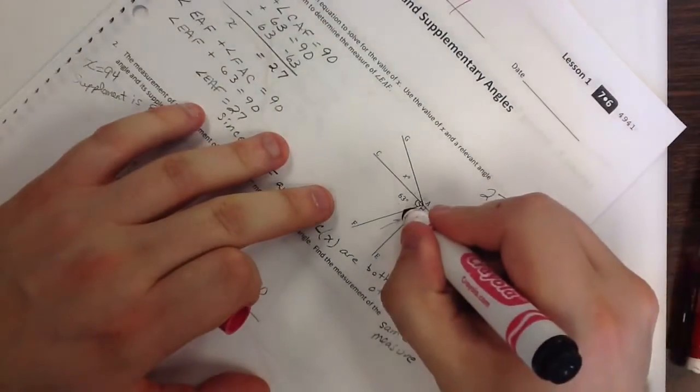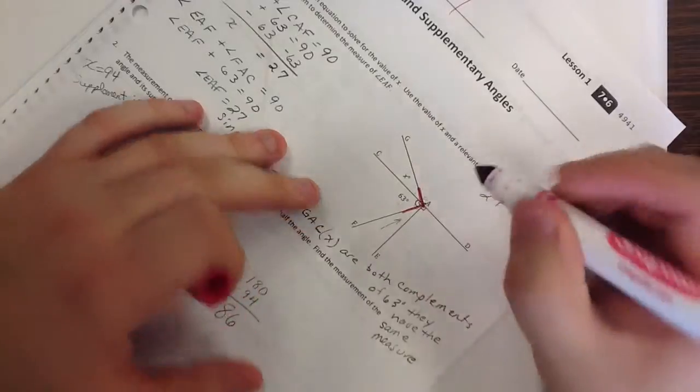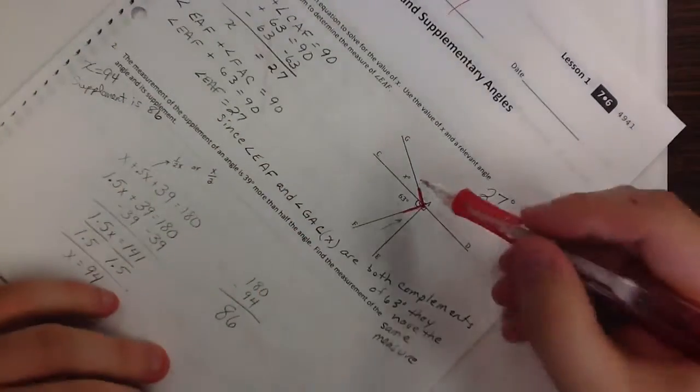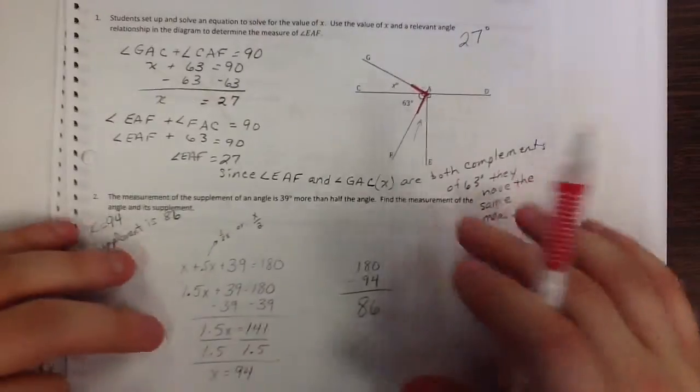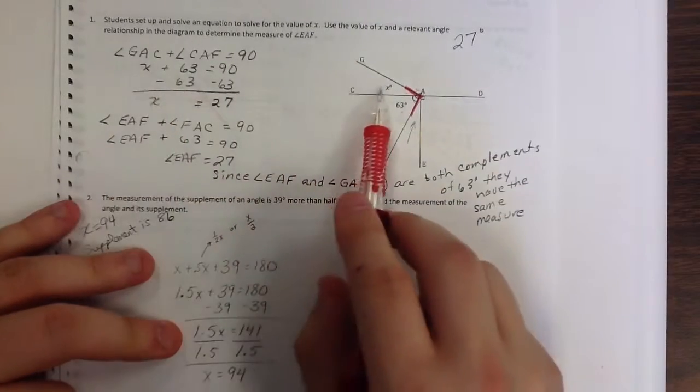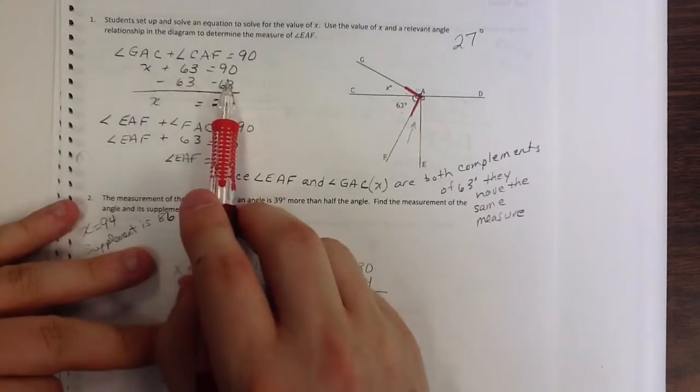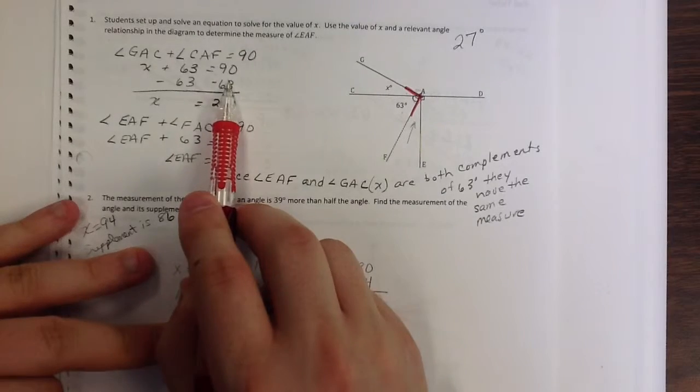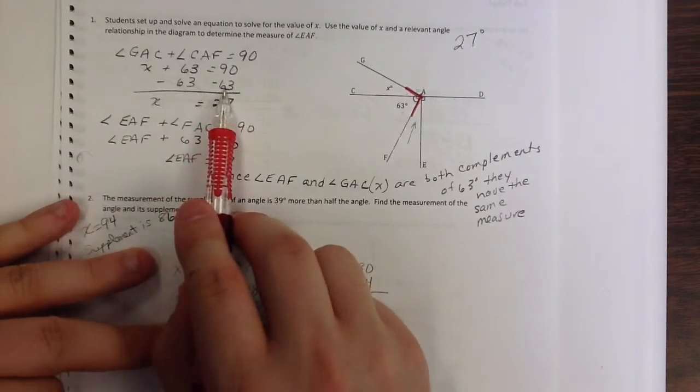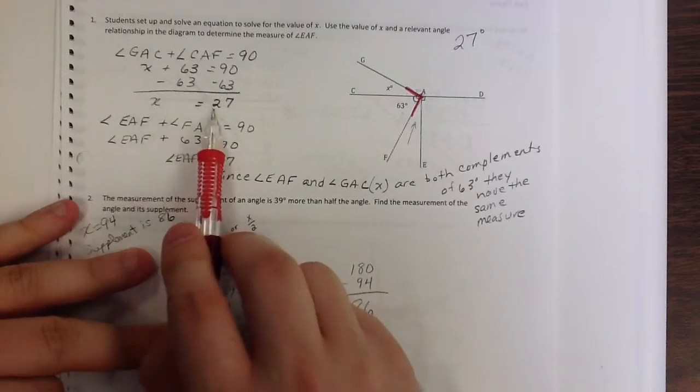This angle right there is made up of these two angles, okay? So if I take my X and my 63, X plus 63, set it equal to 90 because it's a right angle, subtract 63 from both sides, I end up with X equals 27. So this angle right here is 27.